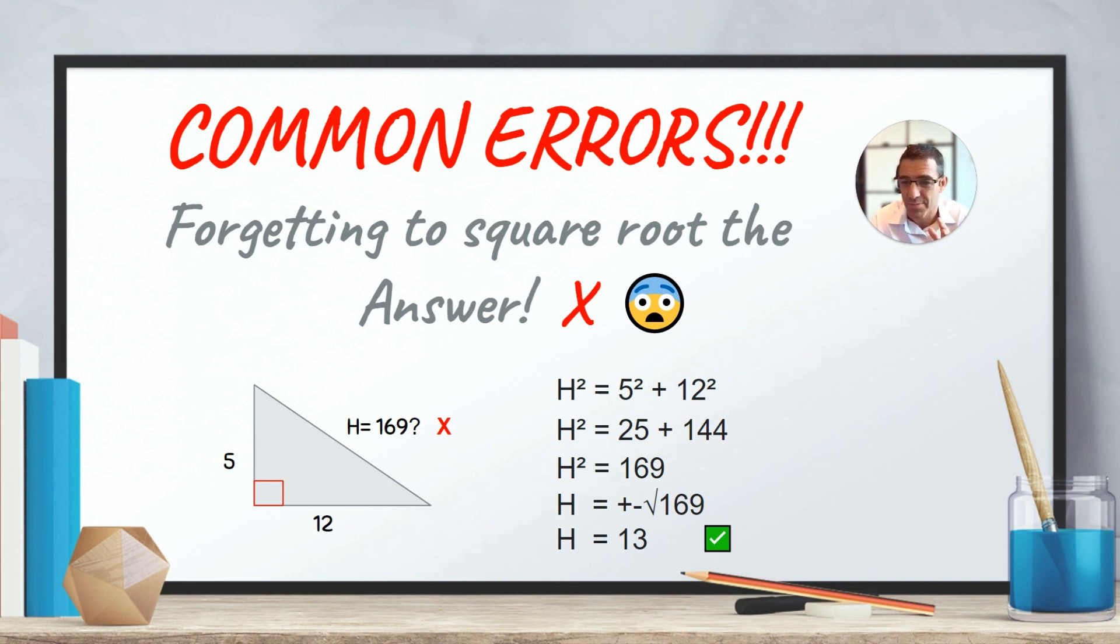Now, square rooting is not the same as dividing by 2. Square rooting is finding the number which, if it was multiplied by itself, would give you 169. And the square root of 169 is 13. If you do 13 times 13, so 13 times itself, you'll find 169.